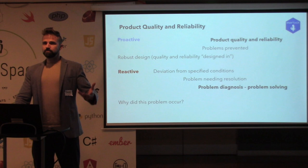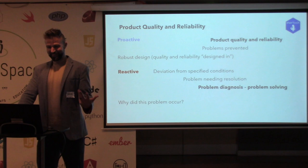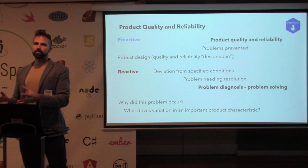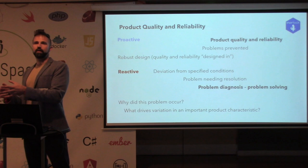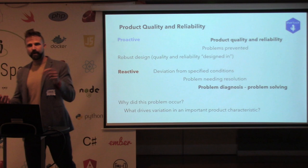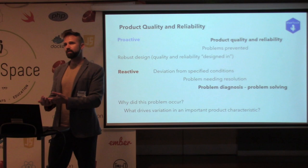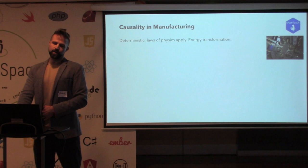Whenever you run into a problem you ask why. Why did this problem occur? Why is this happening? In the engineering world, what you're really asking is: what drives variation? Because your real problem is variation. What drives variation in this product characteristic? It could be a characteristic the end customer cares about, or just a design spec important to the manufacturing team.